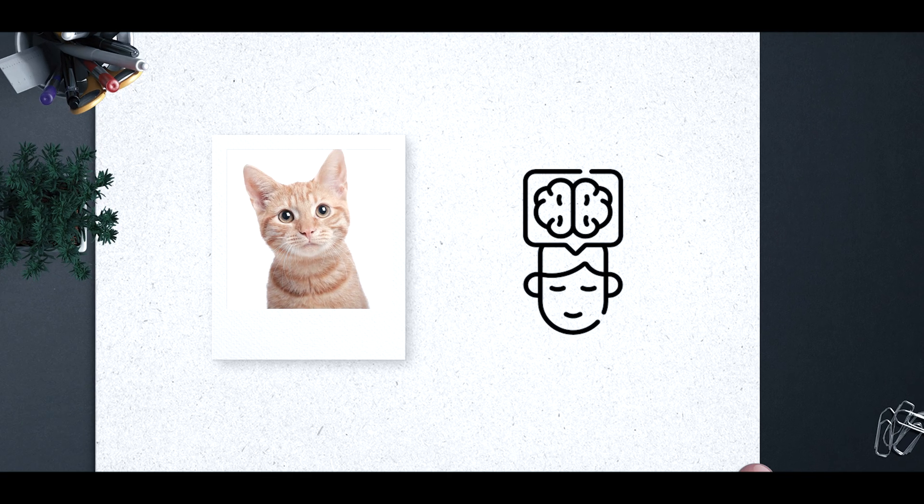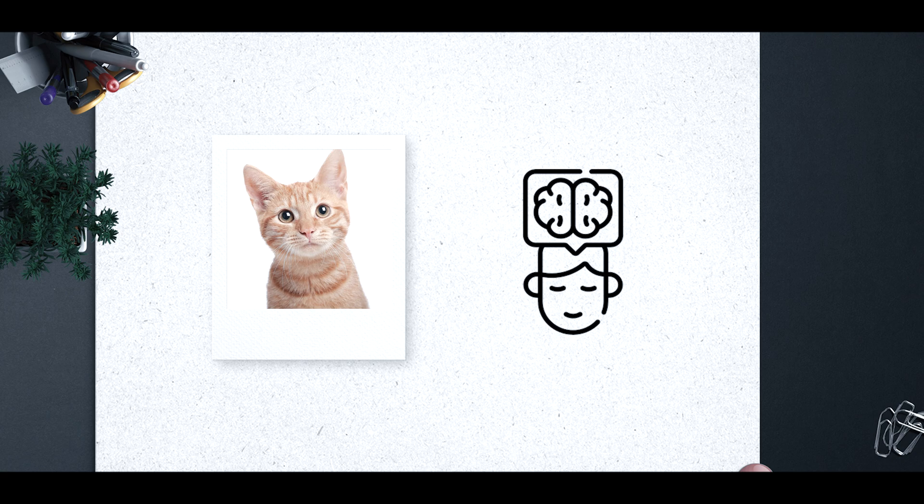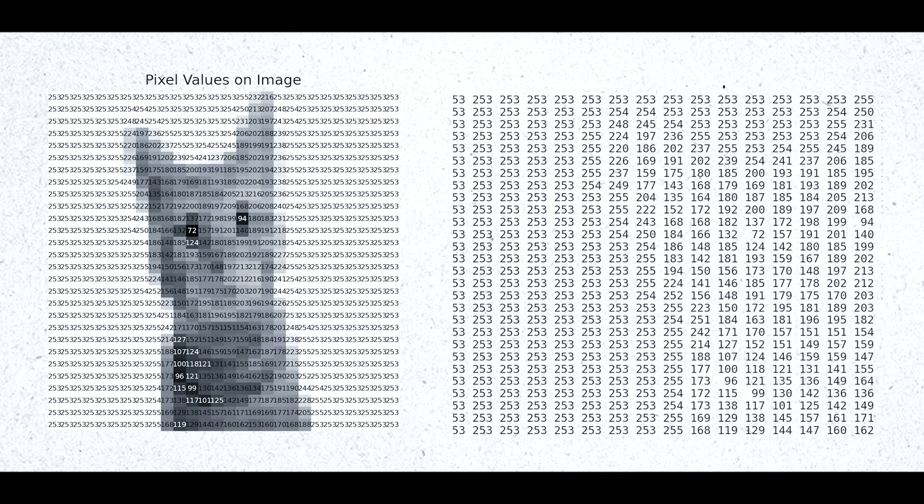So what exactly is computer vision? It is a field of AI that allows computers to see and understand images and videos, just like our eyes and brains do. Think of it this way. When you look at a cat, your brain instantly recognizes it as a cat. But for a computer, that image is just a bunch of numbers, millions of pixels. The idea behind computer vision is not just about capturing images from a camera, it's about understanding their meaning.